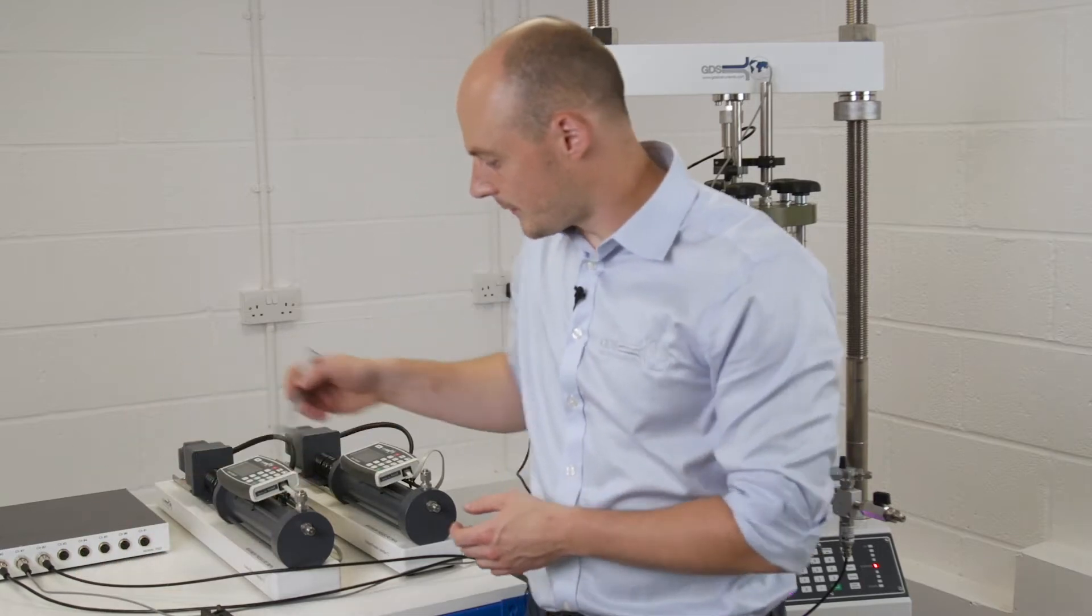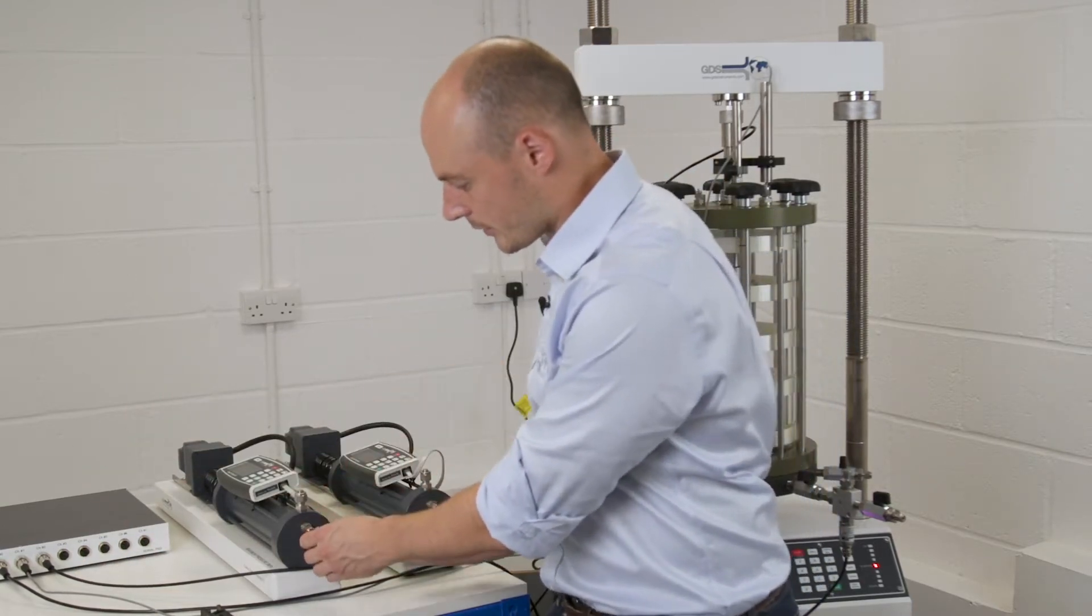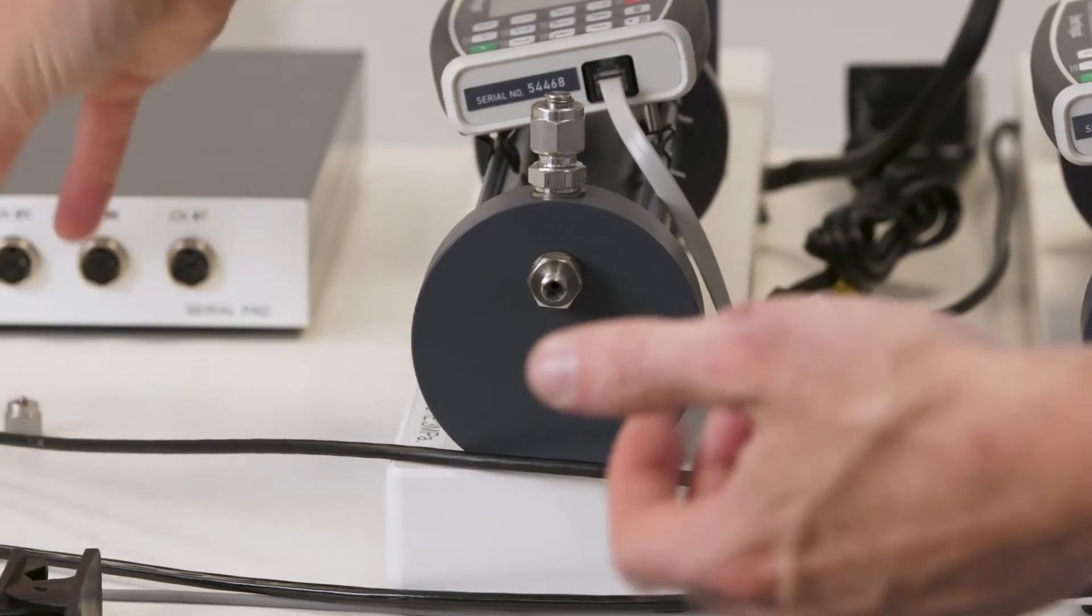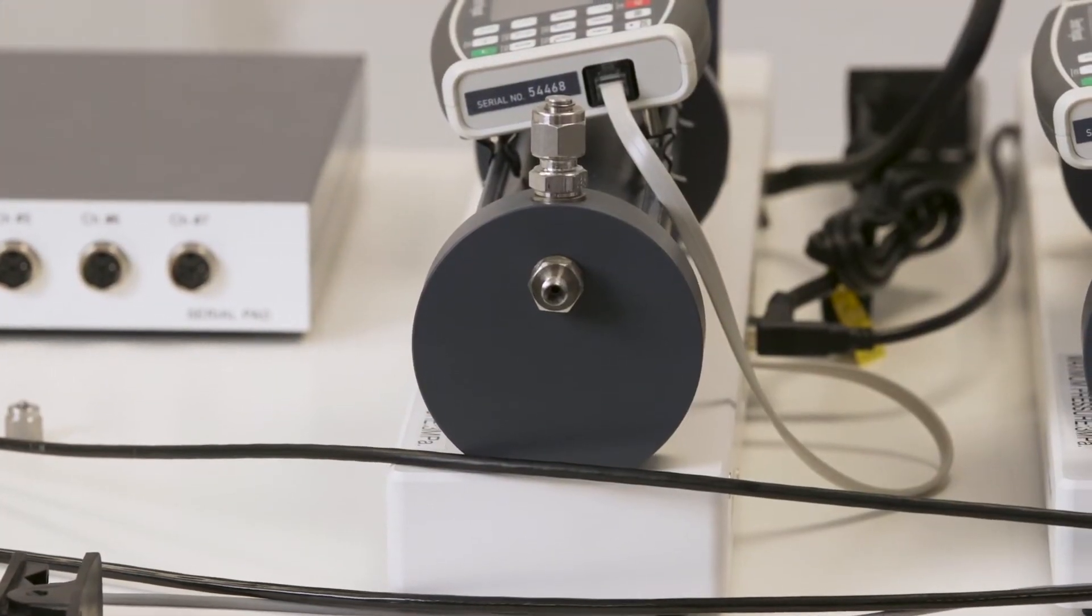The first thing we'll do is remove this blanking nut off of the front of this pressure controller here and we can keep those safe to use again if we need to.